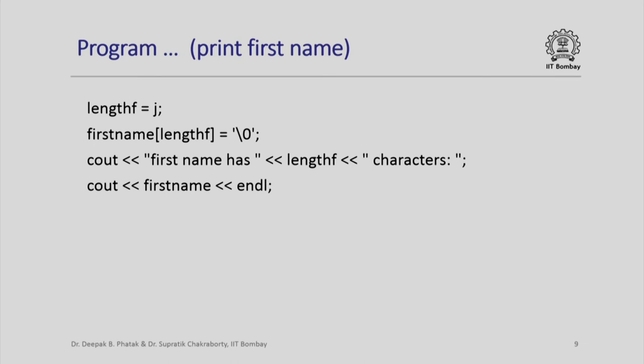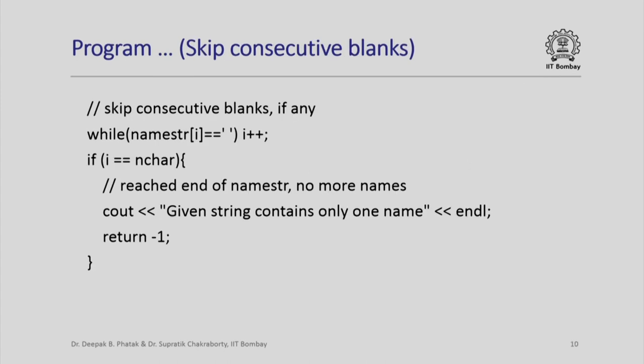We have to now continue doing the same thing with the second string, but before that if we have any blank spaces which are consecutive we need to ignore all of them. So here is a small loop which keeps skipping consecutive blanks: while namestr[i] equal equal blank, i plus plus. All that it does is it simply keeps on incrementing as long as I keep encountering a blank space. What it means is that when this loop ends, I would have the first non-blank character of the second name.